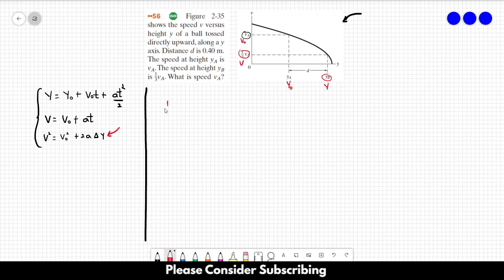We know that 1 third of VA squared, this is V squared, is equal to VA squared plus 2 times A times YB minus YA. YB minus YA is D, and we know the value of D, which is 0.4.